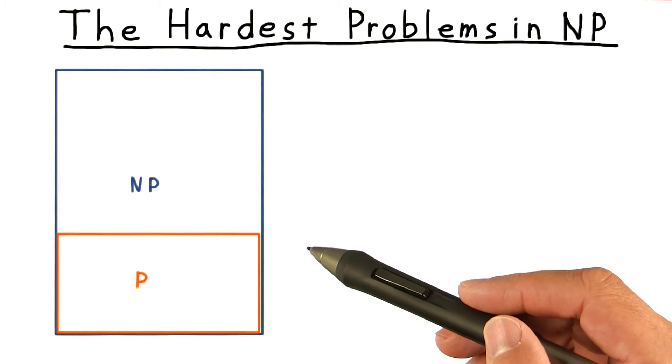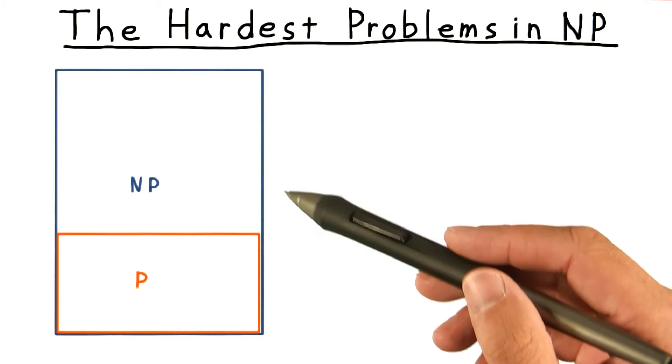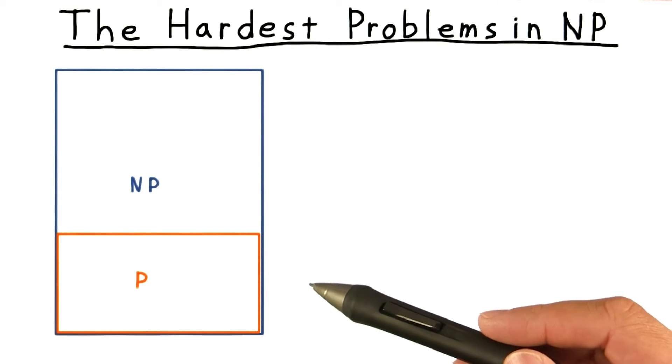That is to say, there are some problems in NP but not in P where the answer can be verified efficiently, but it can't be found efficiently. But no one knows how to prove this yet.